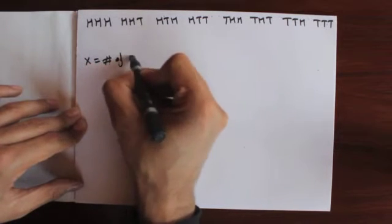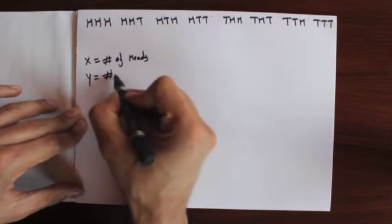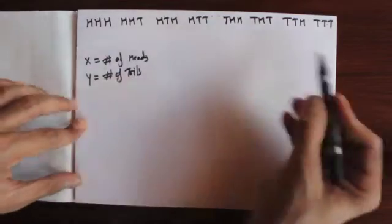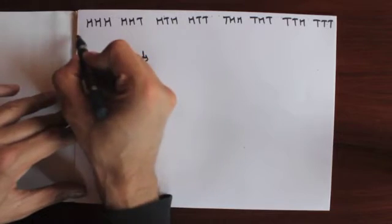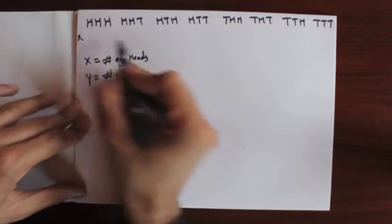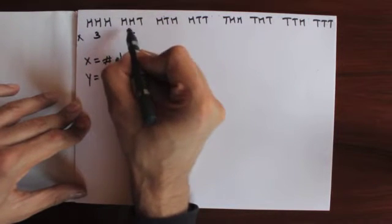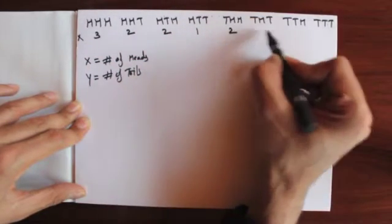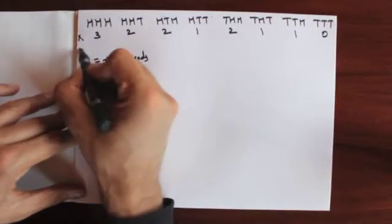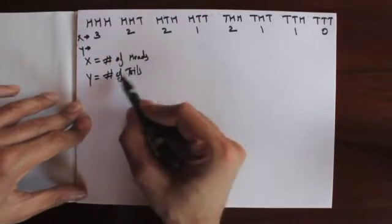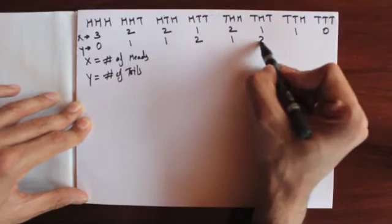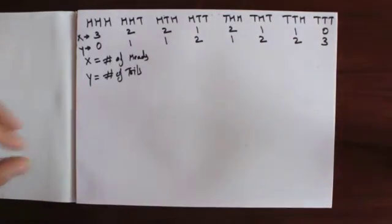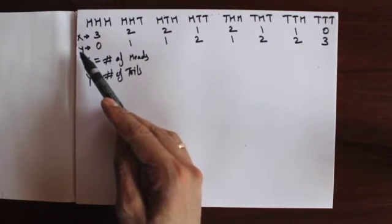Now let's define a random variable X where we count the number of heads, and another random variable Y where we count the number of tails. For X: head-head-head gives 3, head-head-tail gives 2, head-tail-head gives 2, head-tail-tail gives 1, tail-head-head gives 2, tail-head-tail gives 1, tail-tail-head gives 1, tail-tail-tail gives 0. Similarly, Y counts tails. Random variable X takes values 0, 1, 2, and 3, and likewise random variable Y also takes values 0, 1, 2, and 3.